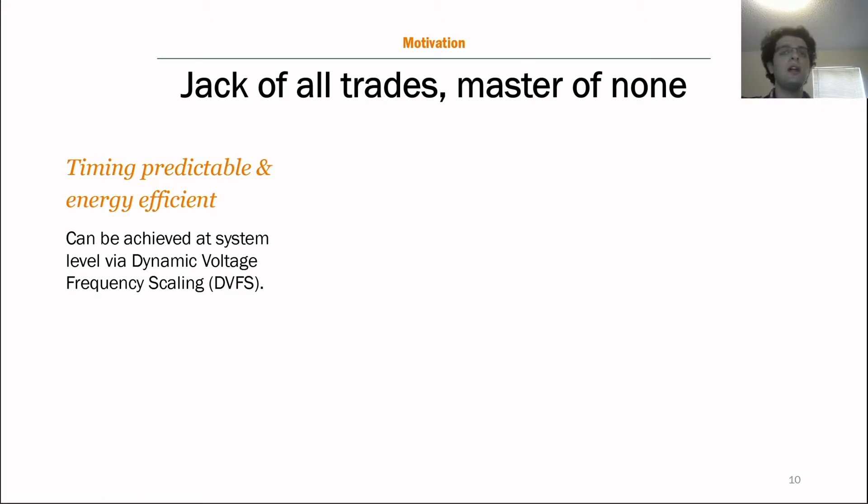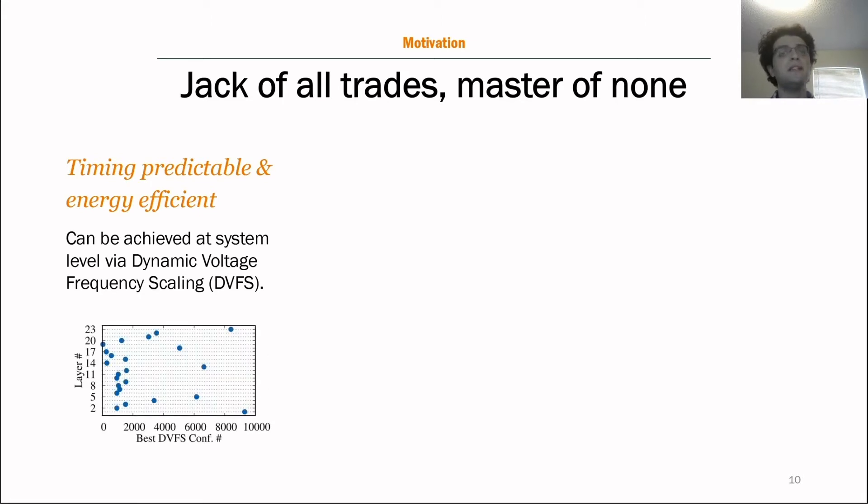However, achieving these two goals simultaneously for DNNs is not simple. Reactive DVFS adjustment generally acts blind and doesn't perform well. Application-specific tools, on the other hand, look promising. However, very early on, we discovered that each DNN layer is its own application, meaning it has its own power profile and reacts differently to DVFS adjustment. Here, we have scoured all the possible DVFS configurations on the NVIDIA's Jetson TX2 for each layer of AlexNet. You can see the layer numbers on the y-axis, and recorded the DVFS configurations that consume the least amount of power. As you can see, each layer has a different optimal DVFS configuration.